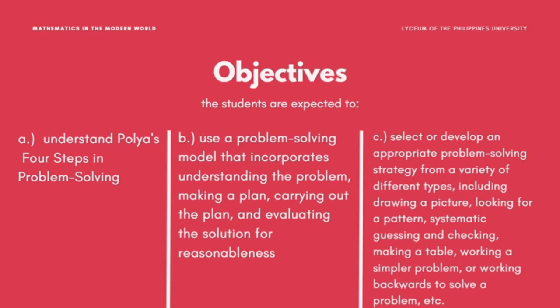And C. Select or develop an appropriate problem solving strategy from a variety of different types, including drawing a picture, looking for a pattern, systematic guessing and checking, making a table, working a simpler problem, or working backwards to solve a problem, among others. These four steps in problem solving made by Polya were developed in 1945.